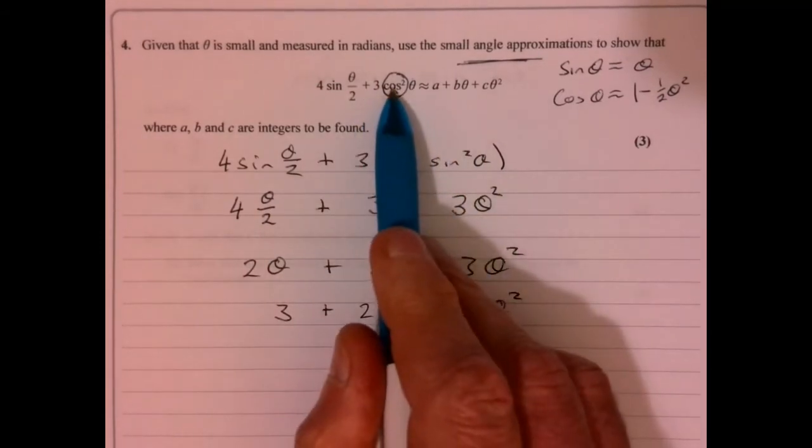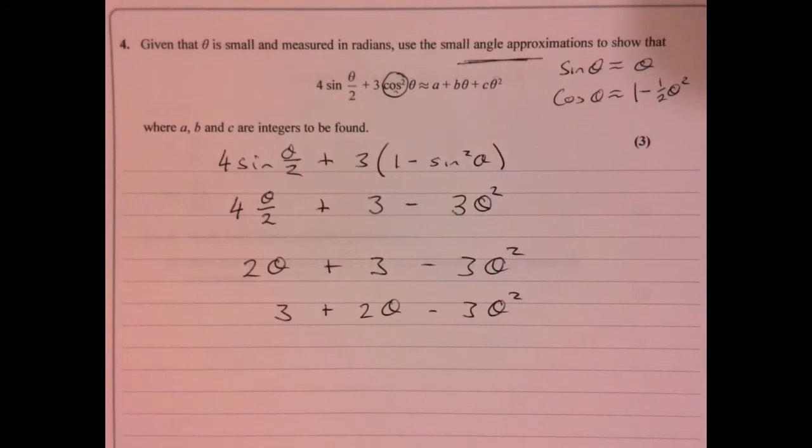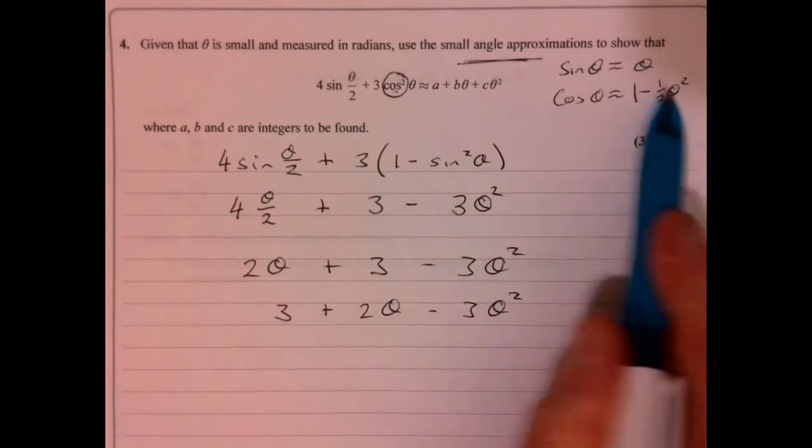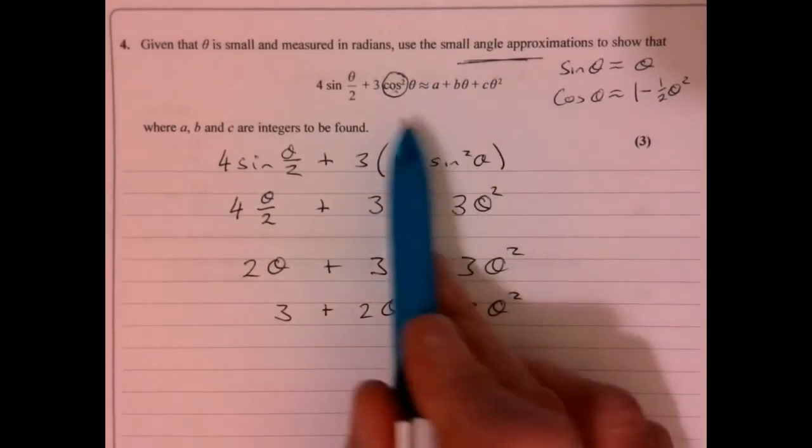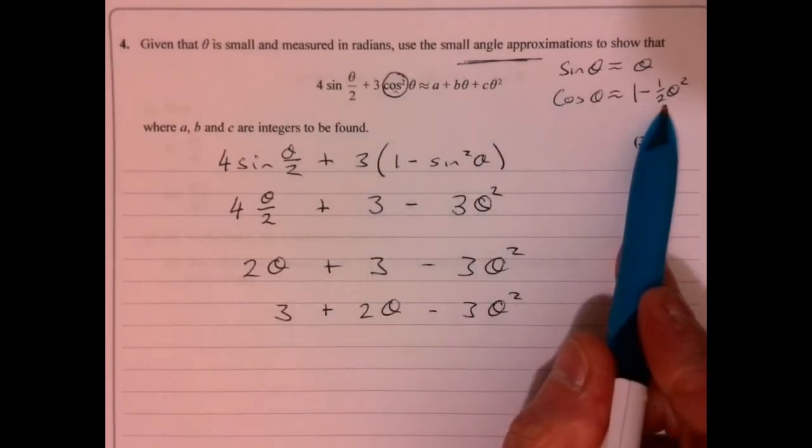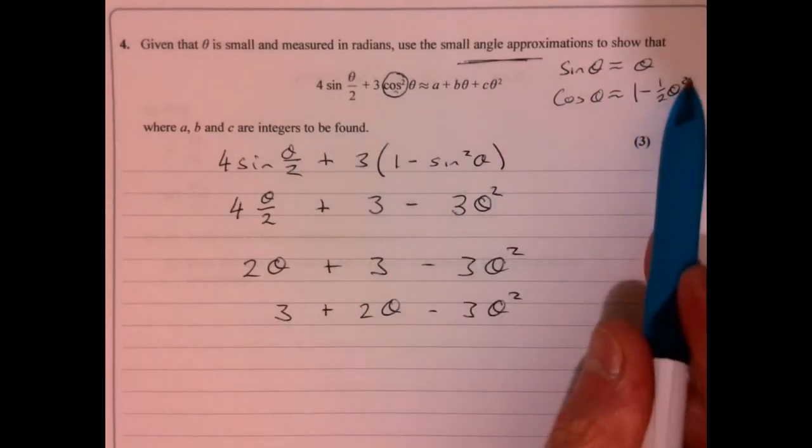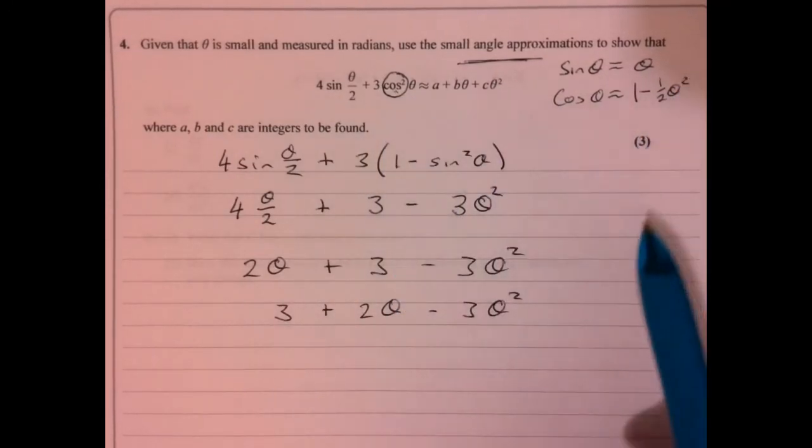If you worked through with cos squared, putting this in, yes, it's a little bit harder work. All that'll happen is that you'll end up, to be honest with you, first time I did this, I just did this. And it was a lot harder. And then I ended up getting a theta to the power of four in my answer.